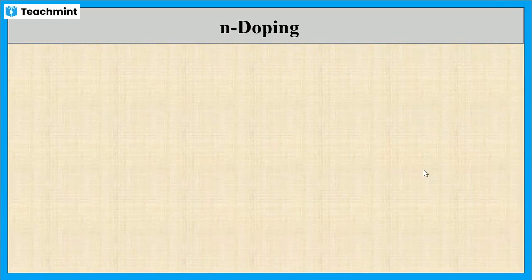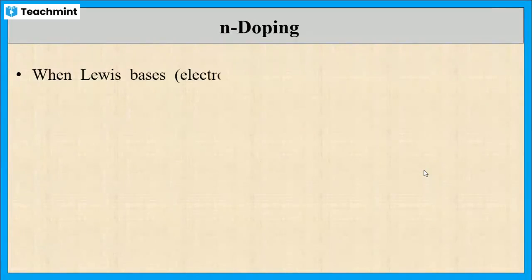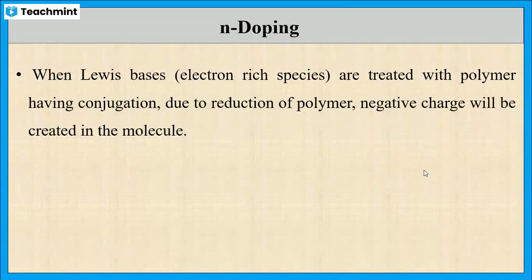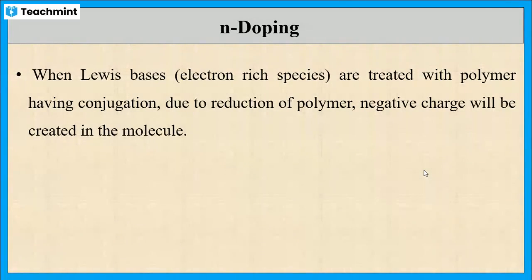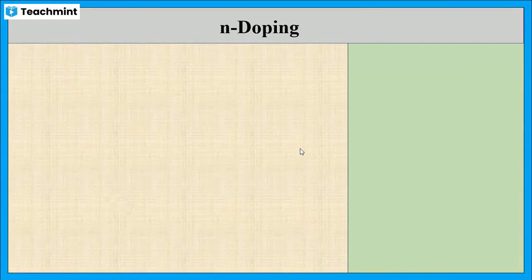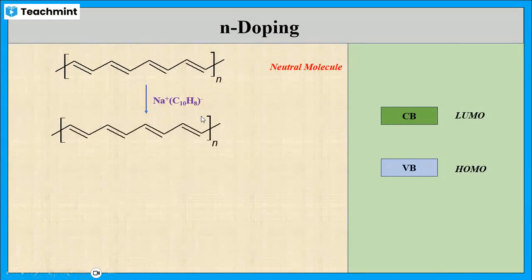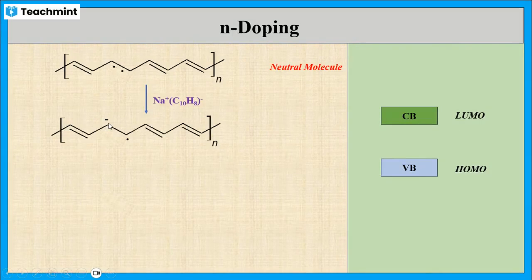Now let us see the N-doping mechanism. It is similar to P-doping, but here we use Lewis bases as dopants and the polymer undergoes reduction, which results in the creation of negative charges. In N-doping, initially the neutral molecule is an insulator as it has a higher band gap. On doping with sodium naphthalide, the polymer gains one electron, resulting in the formation of a radical anion called a polaron.